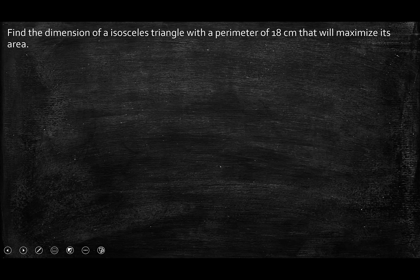Hi everybody, welcome back to my channel. In this question, we have an optimization question asking us to find the dimension of an isosceles triangle with a perimeter of 18 centimeters that will maximize its area. So let's do it.